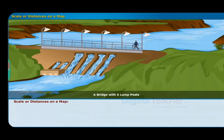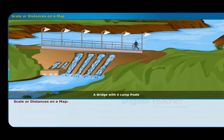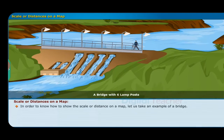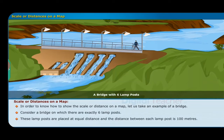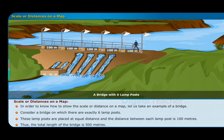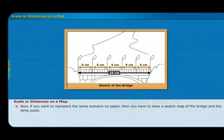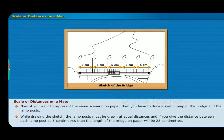Now let us look at the topic of scale or distances on a map. In order to understand how to show scale or distance on a map, let us take the example of a bridge. Consider a bridge on which there are exactly six lamp posts. These lamp posts are placed at equal distances, and the distance between each lamp post is 100 meters, so the total length of the bridge is 500 meters. If you want to represent this on paper, you have to draw a sketch map of the bridge and the lamp posts, with the lamp posts drawn at equal distances.